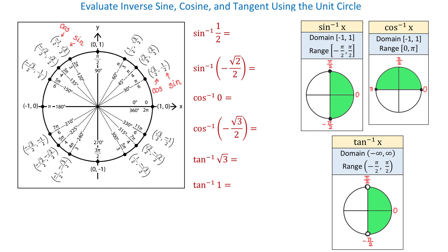If we look at the unit circle, we see two angles whose sine is 1 half. The first one is pi over 6, where the value of sine is 1 half, and the other one is 5 pi over 6, where the value of sine is also 1 half. So then, what is the answer — pi over 6 or 5 pi over 6?